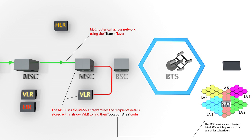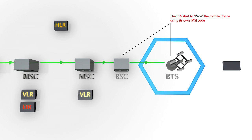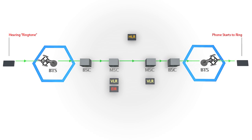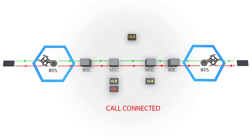Once this information has been found, the MSC then broadcasts the recipient's IMSI to all the base stations within that geographical area. If the matching device recognises this page, the calling party will hear a ringtone and the recipient's phone will start to ring. This process continues until the call is answered, where both channels are connected and the call can finally begin.